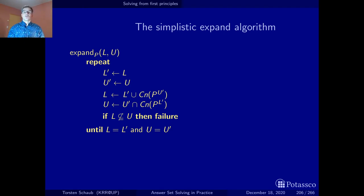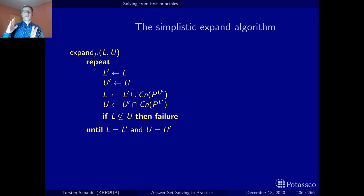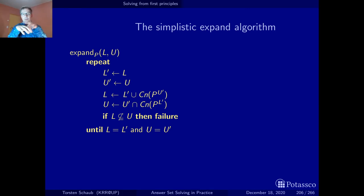The additional part is a conditional that checks whether the lower and upper bound have crossed — that is, the lower bound is no longer contained in the upper bound. This indicates a conflict: the bounds converged and passed each other, meaning there was no stable model in between, indicating failure. If this procedure was called from a backtracking procedure, we then have to backtrack. In this way, our EXPAND algorithm detects inconsistency when there is no stable model between the given lower and upper bound.